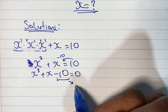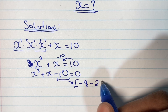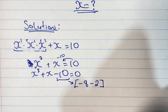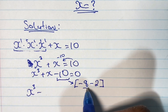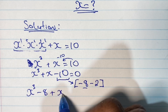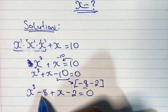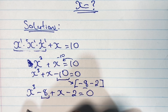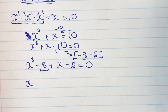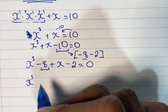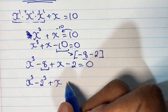Now if we look at our constant term, negative 10 can be written as negative 8 minus 2. We substitute this into our equation, giving us x to the power of 3 minus 8 plus x minus 2 is equal to 0. This makes our equation easier to solve, as 8 is a perfect cube, so we can write x cubed minus 2 cubed plus x minus 2 is equal to 0.